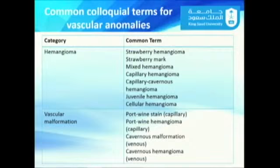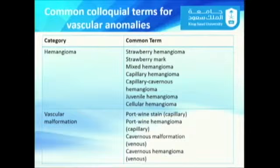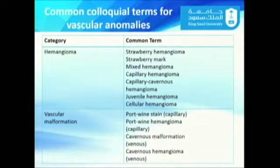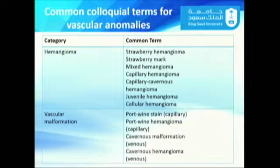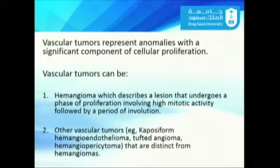Here is how confusing the terms we currently use can be. For hemangioma alone, there are many terms: strawberry hemangioma, strawberry mark, mixed hemangioma, capillary hemangioma, capillary cavernous hemangioma, just hemangioma, infantile hemangioma, and others. For vascular malformations, terms like port wine stain, port wine hemangioma, and capillary malformation are all used inconsistently. This illustrates the need for a common classification so we can speak the same language and present our data in a more standardized way.